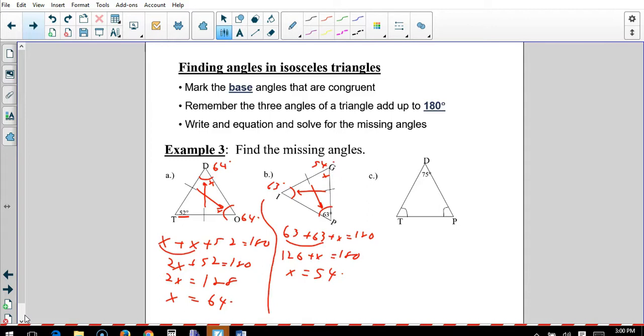And C is going to be similar to A. X, X. I'll write it differently this time. I'll just go ahead and write, say 2X plus 75 equals 180. Subtract 75. 2X equals 105. X equals, divide by 2, 52.5 degrees. So, each one of these is 52.5 degrees.